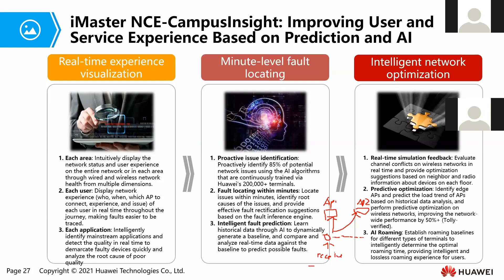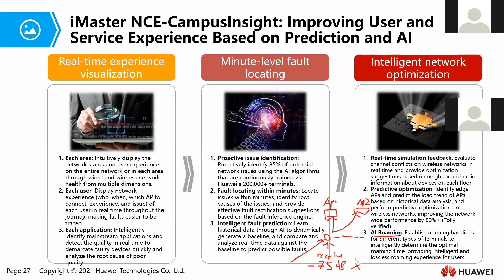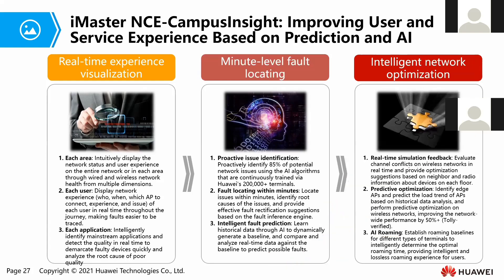Traditionally, roaming only occurs when the user receives a very bad signal — such as when signal strength drops to -75 dBm — which gives a poor user experience. With AI roaming, Campus Inside detects when the signal reaches around -60 or -65 dBm and automatically helps the user roam from AP1 to AP2 proactively. These are the three main features: real-time experience visualization, minute-level fault locating, and intelligent network optimization.